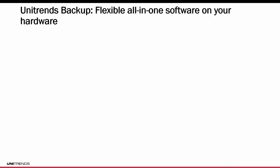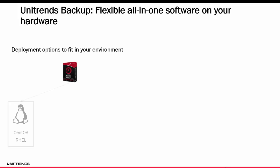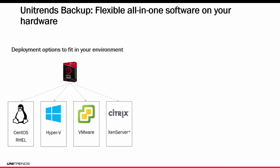Let's dive into the Unitrends backup software. The software provides a flexible, all-in-one solution on your hardware, with deployment options that fit your environment — whether that's on a physical Linux server or deployed within your Hyper-V, VMware, or even your Citrix Xen server environment. Note that with Xen server you're only going to be able to back up Xen server with a Xen server deployment. The solution also offers a radically simple, easy-to-use user interface, so you and anyone on your staff can learn and understand how to use it really quickly.